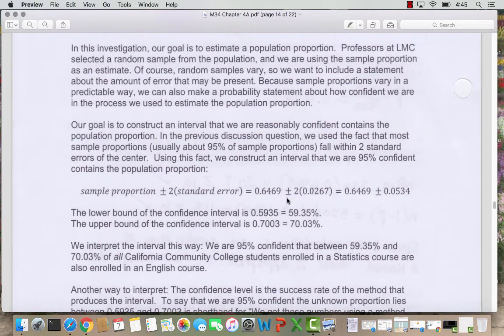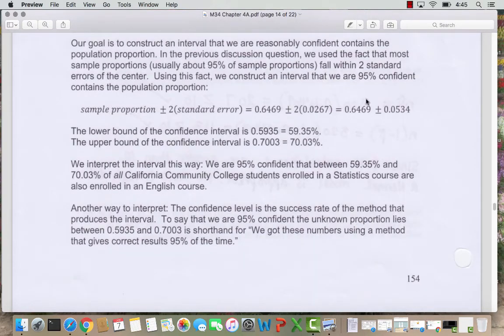And then I'm going to add and subtract two standard errors to get a range of possible values that I think the actual population value might lie in. So we've got here our sample proportion, 0.6469. And this symbol is plus or minus, meaning we're going to go through two operations. Two times 0.0267. If we multiply this out, we get 0.0534.